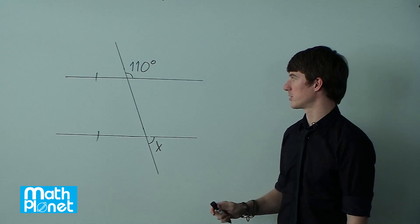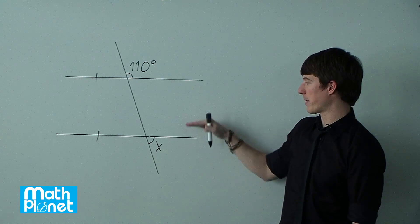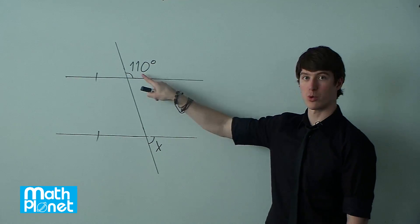There are two important things we need to be able to do to find that angle. First of all, since these are parallel, we can see that these are corresponding angles.